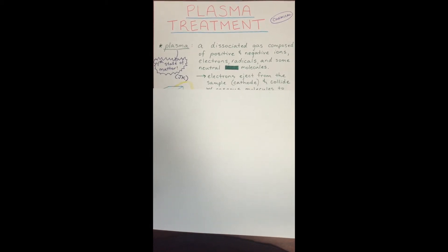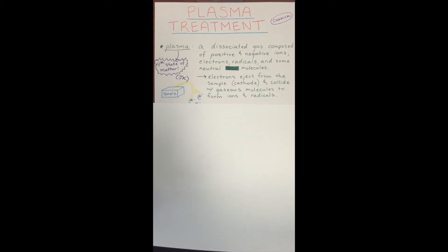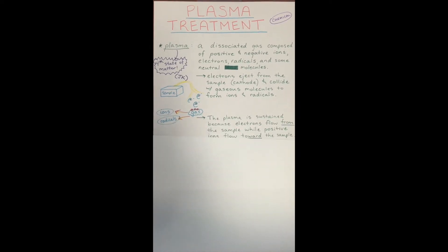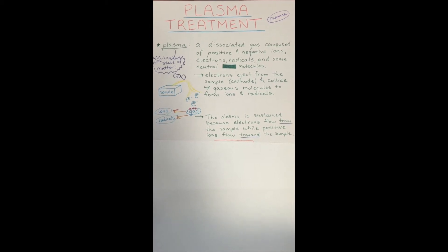During plasma treatment, electrons eject from the sample surface, the cathode, and bombard the gaseous molecules to form ions and radicals. Again, the gaseous molecules are bombarded to form ions and radicals. Let's look at the schematic below to visualize this procedure.